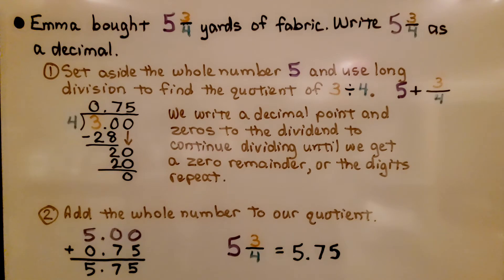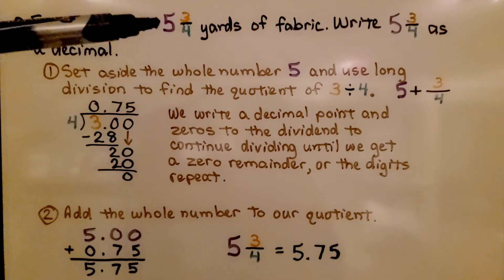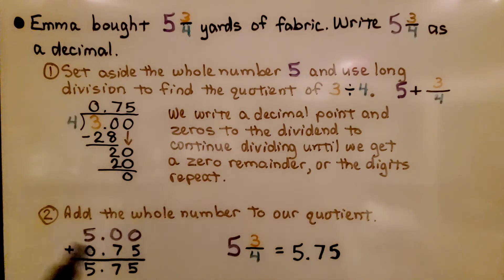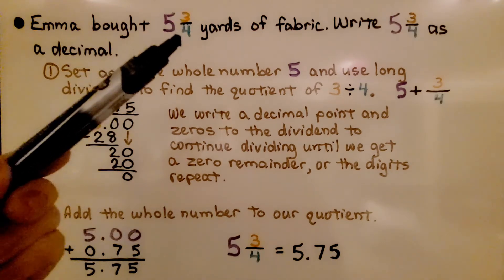Emma bought 5 and 3/4 yards of fabric. Write 5 and 3/4 as a decimal. The first thing we do is set aside the whole number 5 and use long division to find the quotient of 3 divided by 4.